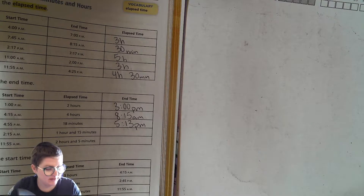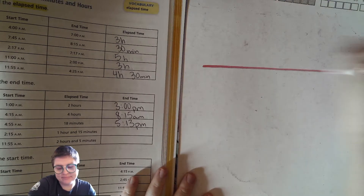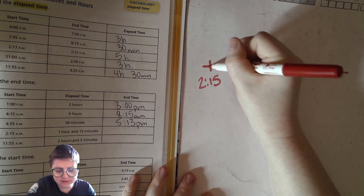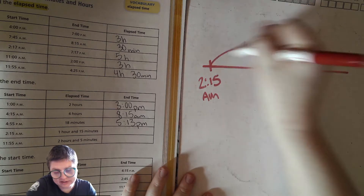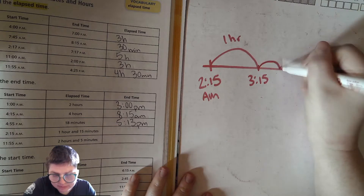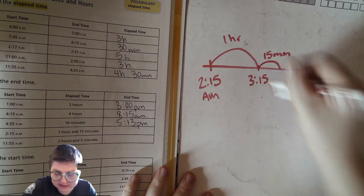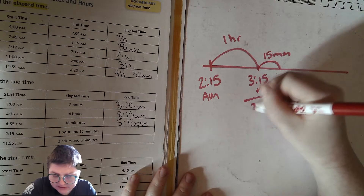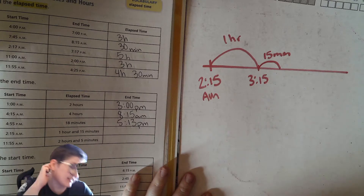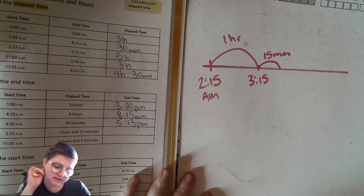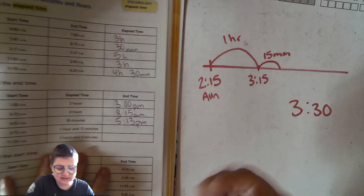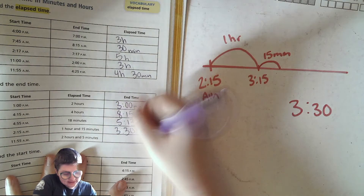Next one: starting at 2:15 AM. We're going to hop forward one hour and 15 minutes. First, hop forward one hour — that takes us to 3:15. Then hop forward 15 minutes. Adding 15 to the minutes brings us to 3:30. I don't usually like to just add directly to the numbers, because time isn't based on 100 — it's based on 60. But here it works out simply: the end time is 3:30 AM.